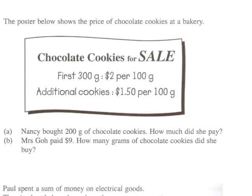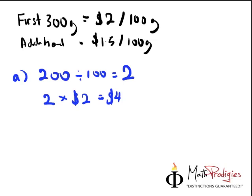Now the part B says Mrs. Goh paid $9. So how many grams of chocolate cookies did she buy? So for this kind of questions again, it's all very simple like we already discussed before. For part B, all you have to do is you have to break it down. Break it down.